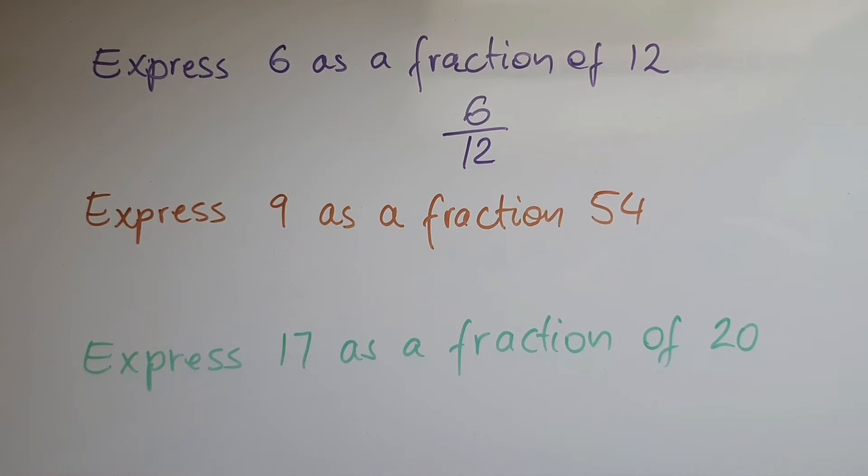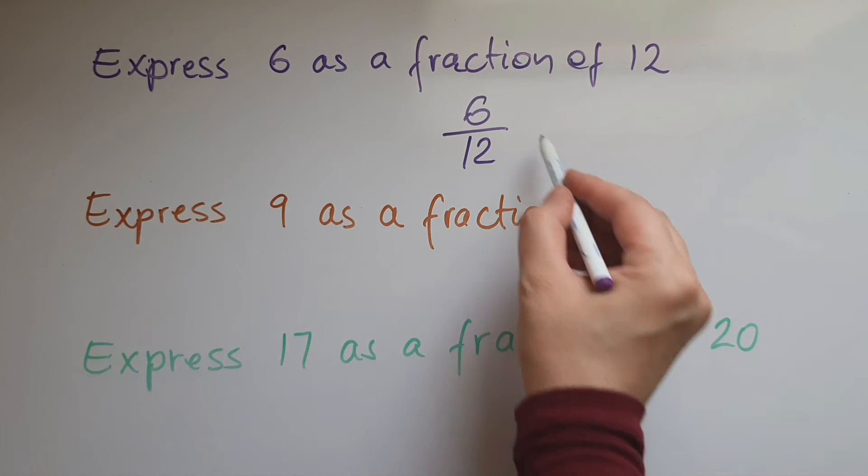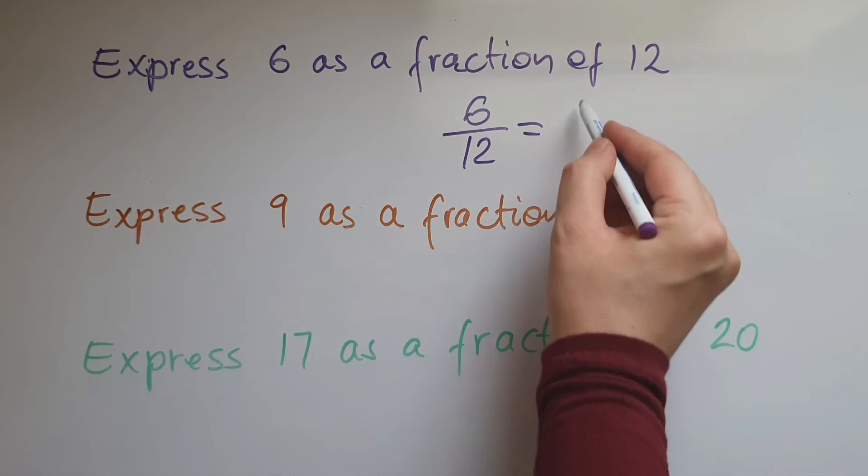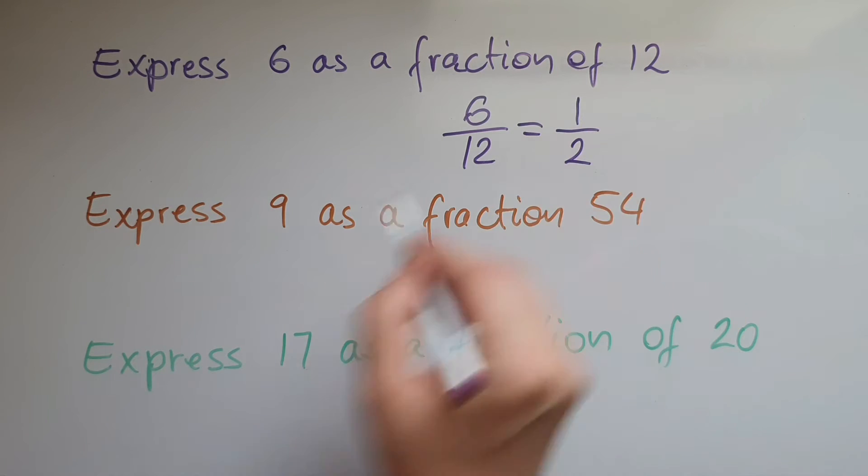It's been expressed as a fraction, but if you want to simplify it further—and I'd encourage you to simplify it further if that is possible—we can divide both of them by 6 and we get 1/2. Now we've got to express 9 as a fraction of 54, so all we need to do is 9 over 54.